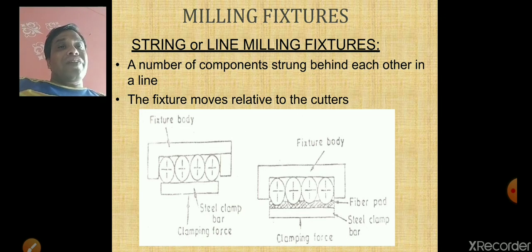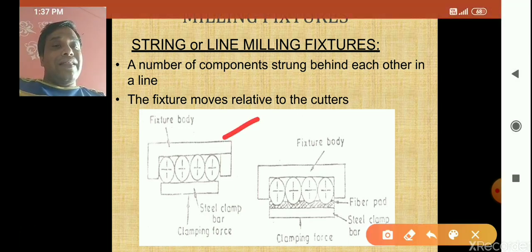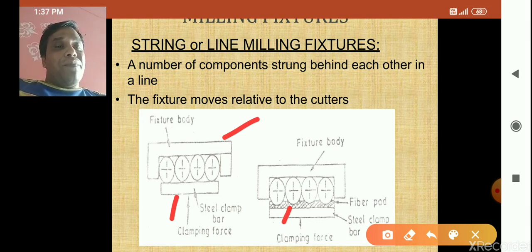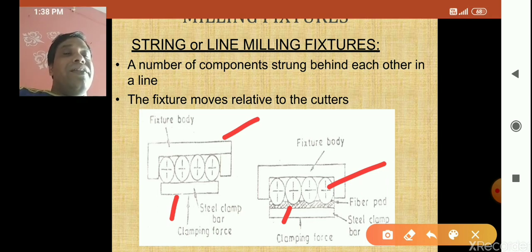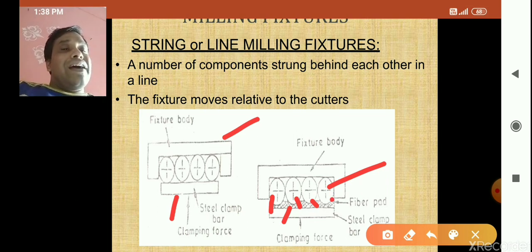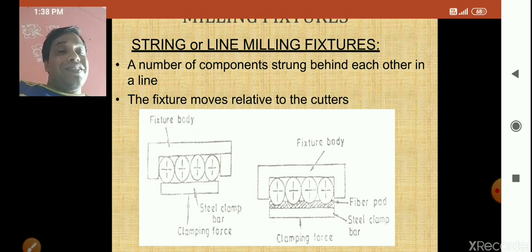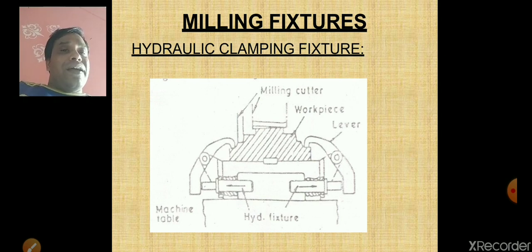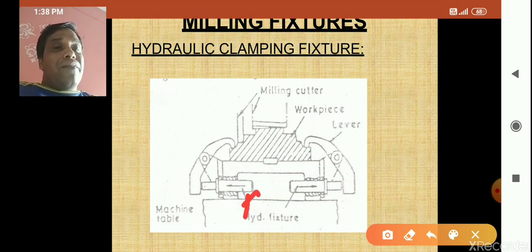Now we will see the string or line milling fixture. The fixture body is there, along with a steel clamp and a fiber pad. The workpieces — five of them — are arranged in a line and fed with respect to the cutter. This is called a string or line milling fixture: a number of components are strung behind one another, clamped with a fixture body, and fed against the cutter.